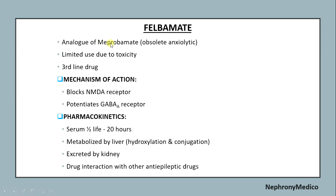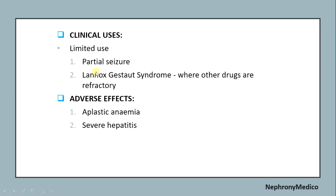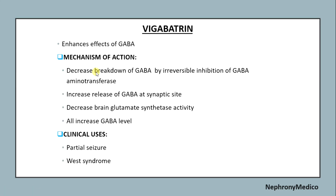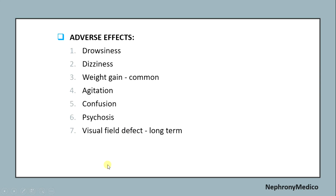Felbamate is an analog of meprobamate with limited use due to toxicity. Vigabatrin enhances the effects of GABA. Its mechanism of action is decreasing the breakdown of GABA by irreversible inhibition of GABA aminotransferase, increasing release of GABA at synaptic sites, and decreasing brain glutamate synthetic activity, all of which increase GABA levels. Clinical uses include partial seizure and West syndrome. Adverse effects include drowsiness, dizziness, weight gain, agitation, confusion, psychosis, and visual field defects in long-term use.